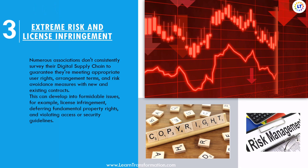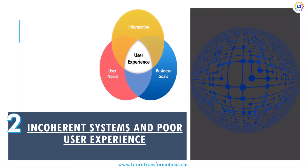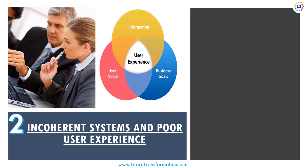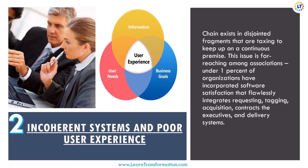Number two is incoherent systems and poor user experience. This lack of integration causes a poor experience for users, which can have a broad ripple effect on the organization. For instance, a user may request software and may not receive a license for quite a long time due to lack of responsiveness. Meanwhile, they may download unauthorized software, which causes its own host of issues. Only one percent of organizations have integrated software fulfillment that seamlessly integrates requesting, tagging, acquisition, contract management, and delivery systems.